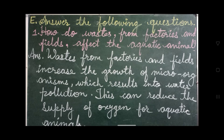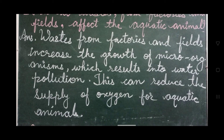Question number E, answer the following questions. Number 1: How do waste from factories and fields affect the aquatic animals? You can also write industrial waste and agricultural waste. Answer: Waste from factories and fields increases the growth of microorganisms, which results in water pollution. This can reduce the supply of oxygen for aquatic animals.